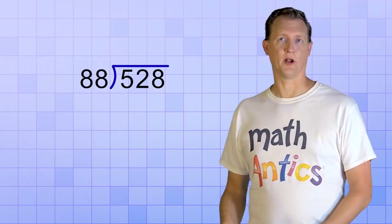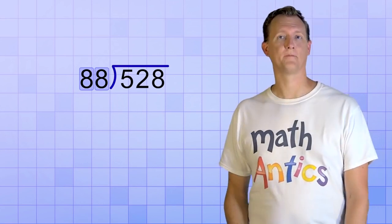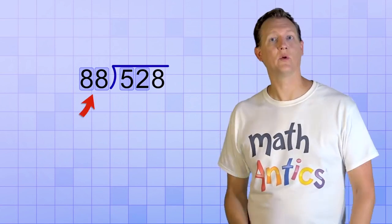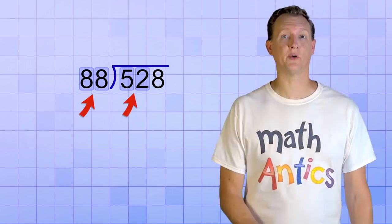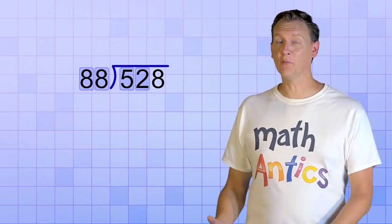Now let's have a look at the next problem. It's also got a 2 digit divisor, so we'll start the same way. We'll start with a 2 digit chunk of our dividend and ask how many 88's will it take to make 52 or almost 52? Uh oh! See the problem? Even though both are 2 digits, this won't work because 88 is already greater than 52.